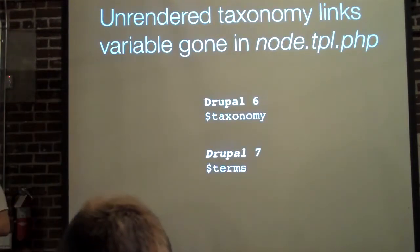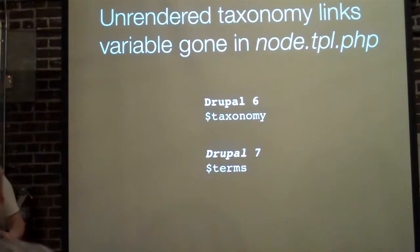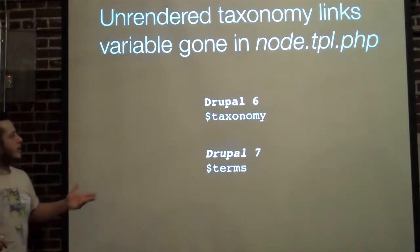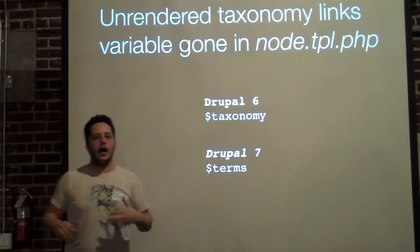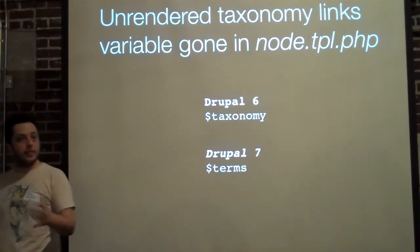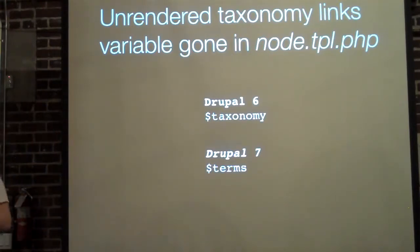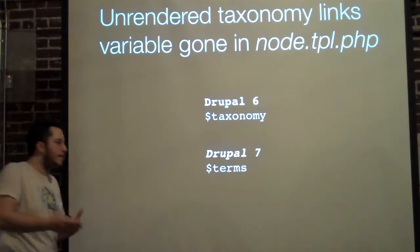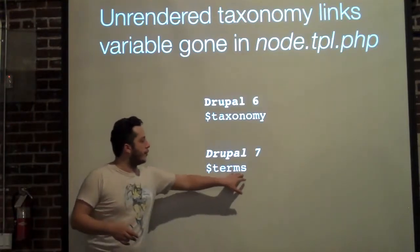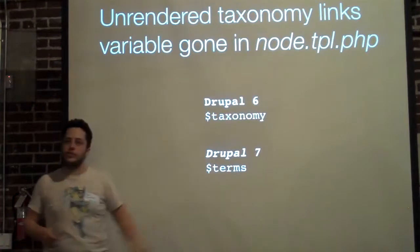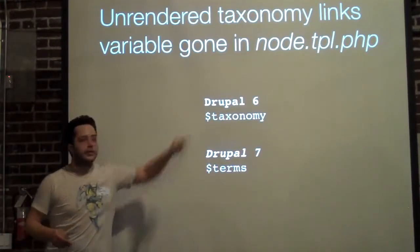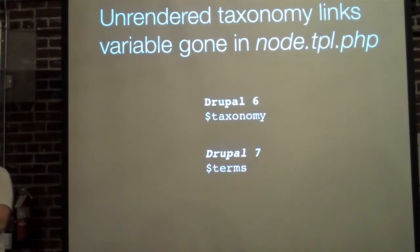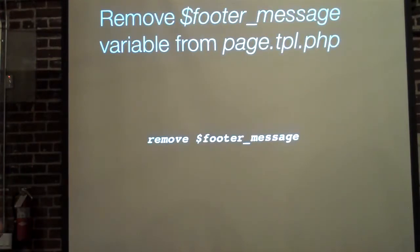Unrendered taxonomy links are now unavailable in node template files. Some people used a PHP variable called taxonomy, thinking it would give them their taxonomy terms, but it's unfiltered and can be a security risk. Now everyone is just sticking with the terms variable in Drupal 7. Terms was available in Drupal 6, but now in 7 only terms is really allowed.